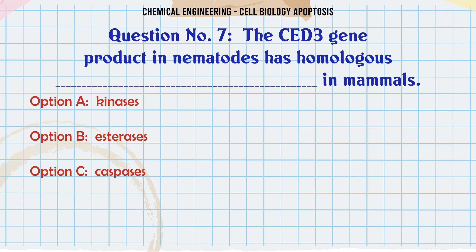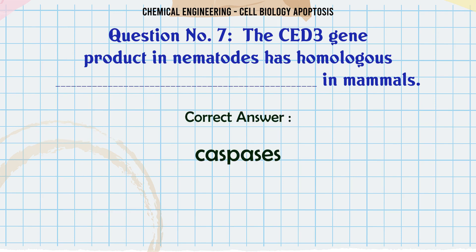The CED3 gene product in nematodes has homologs in mammals: A. Kinases, B. Asterisks, C. Caspases, D. Endonucleases. The correct answer is Caspases.